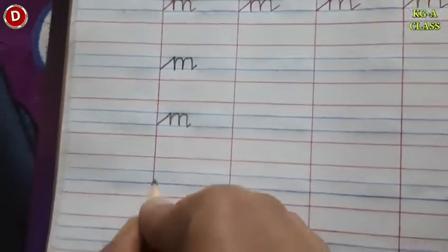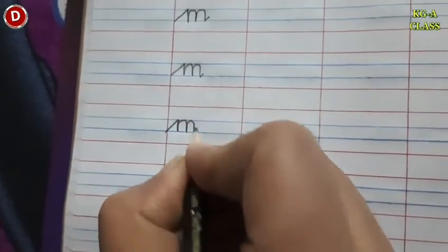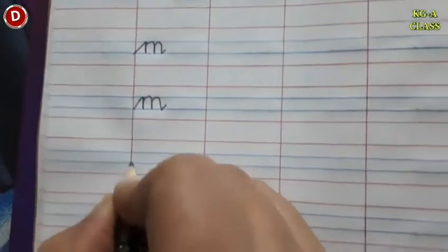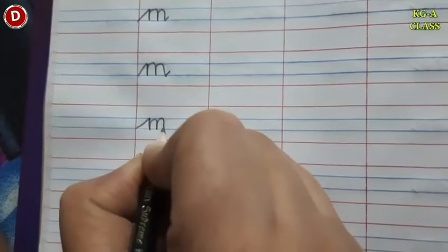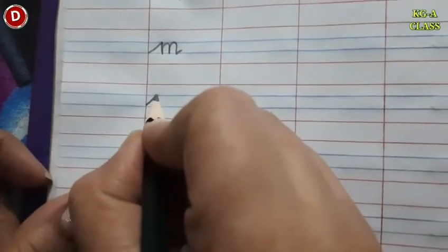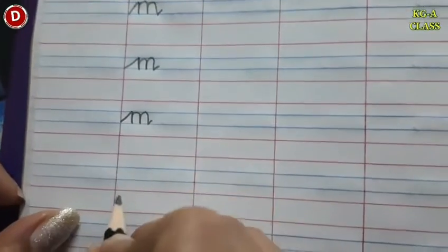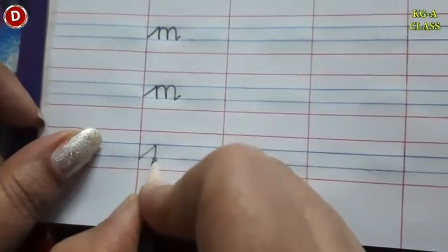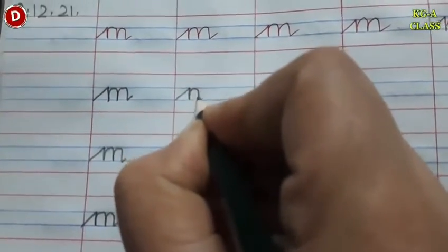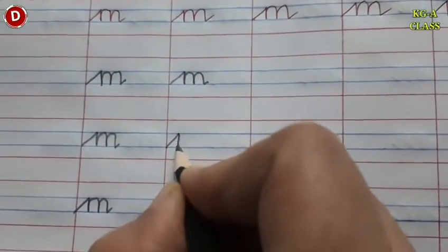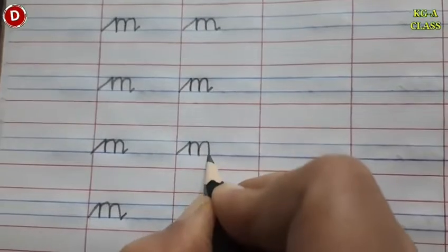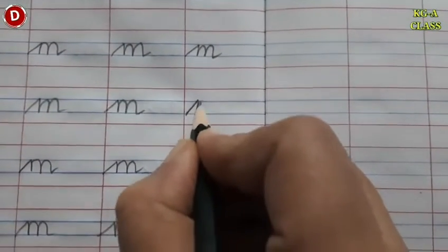See, children, like this. You have to touch both blue lines. You have to write between both blue lines the way I am teaching you. Look here and write it in one go — don't remove your hand in between. Like this. Now we come to the second line. Children, this way you have to write cursive M.